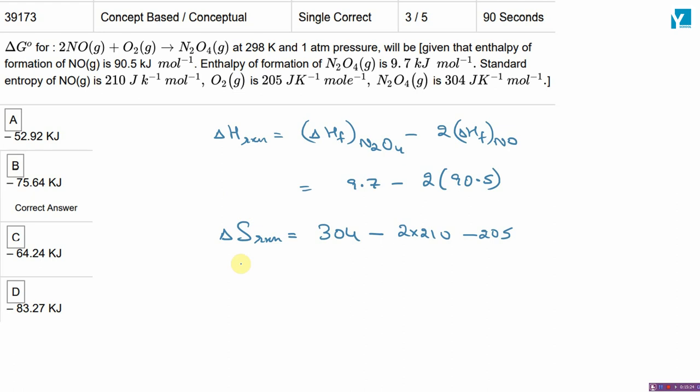So, delta H reaction you found. Delta S reaction you found. Delta G can be calculated as delta H minus T delta S. You can solve this. Answer will come out to be B.